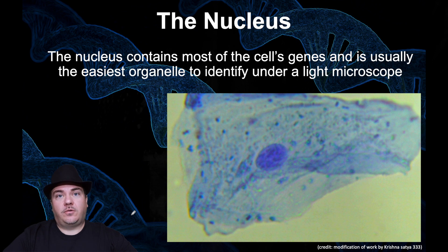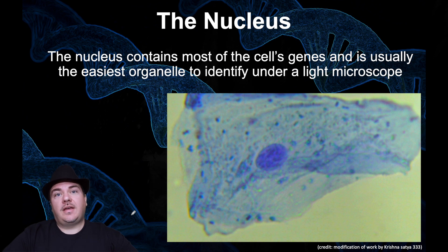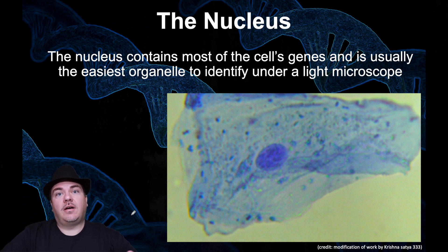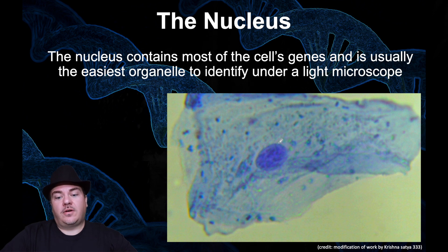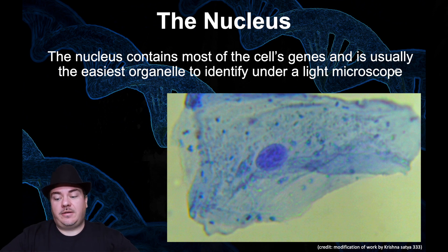The nucleus is where you store most of your DNA, most of your genes, most of your chromosomes inside your cells. It's an organelle that's usually the easiest to identify underneath a light microscope. For example, this image here is of a human skin cheek cell stained with a dye that stains the nucleus dark blue and the plasma membrane light blue. This large circle right here — that's the nucleus. So it's very easy to identify underneath a light microscope.